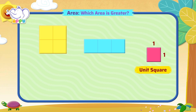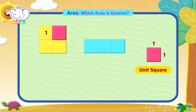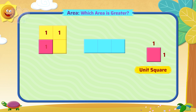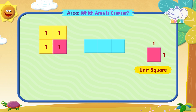The area of the first shape is one, two, three, four. That is four square units.